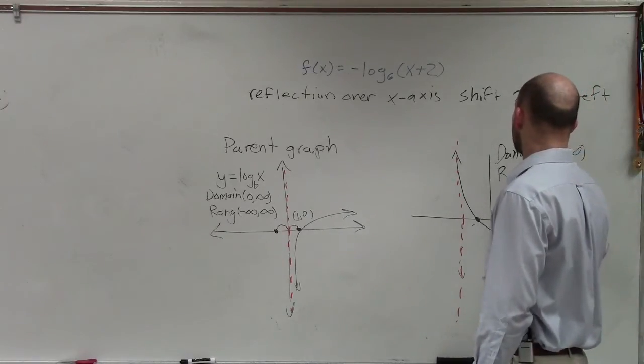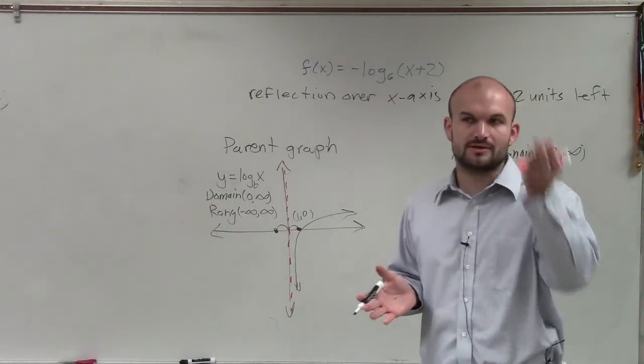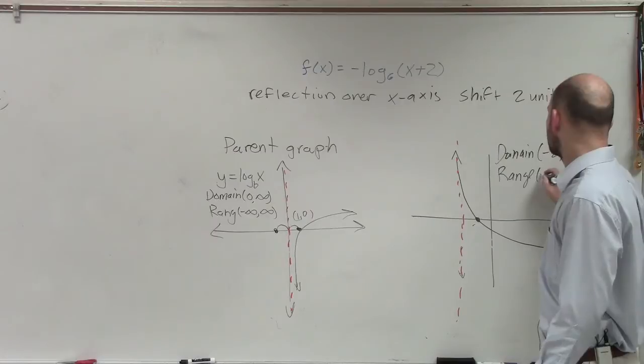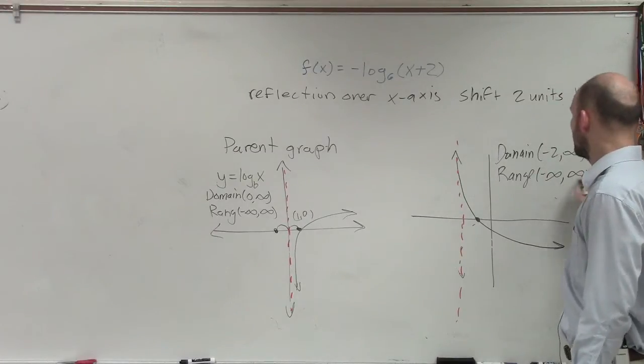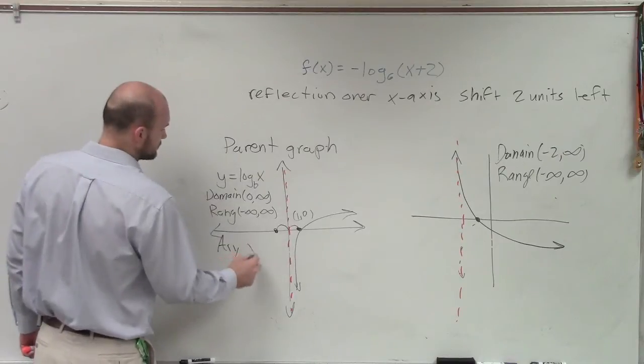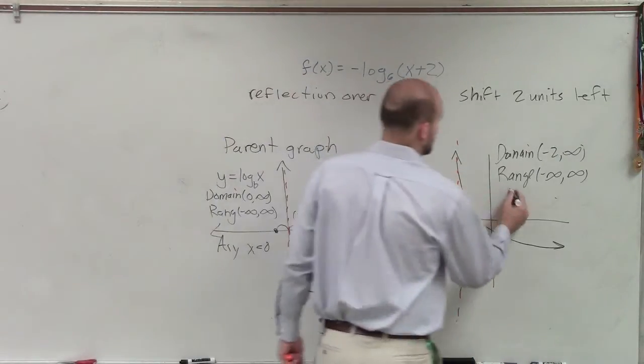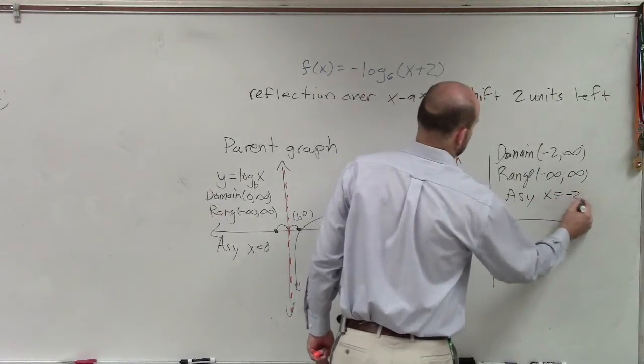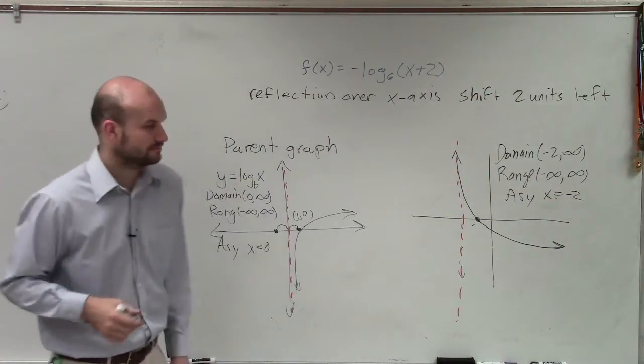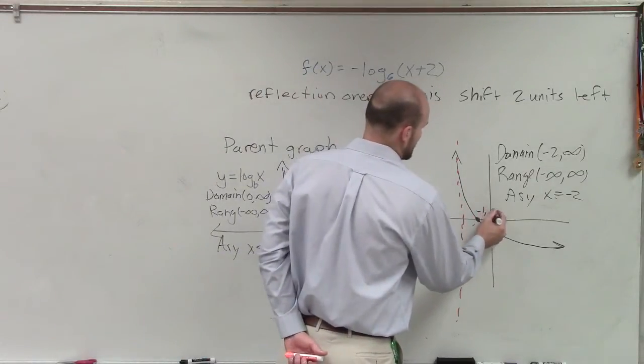My range is unchanged. All right, there's no restriction on the output value going to positive infinity or negative infinity. So that's going to still be negative infinity to infinity. Then when I deal with the asymptote, asymptote's at x equals 0. Well, I shifted the graph 2 units to the left. So now my asymptote equals negative 2. And this is at negative 1 comma 0.